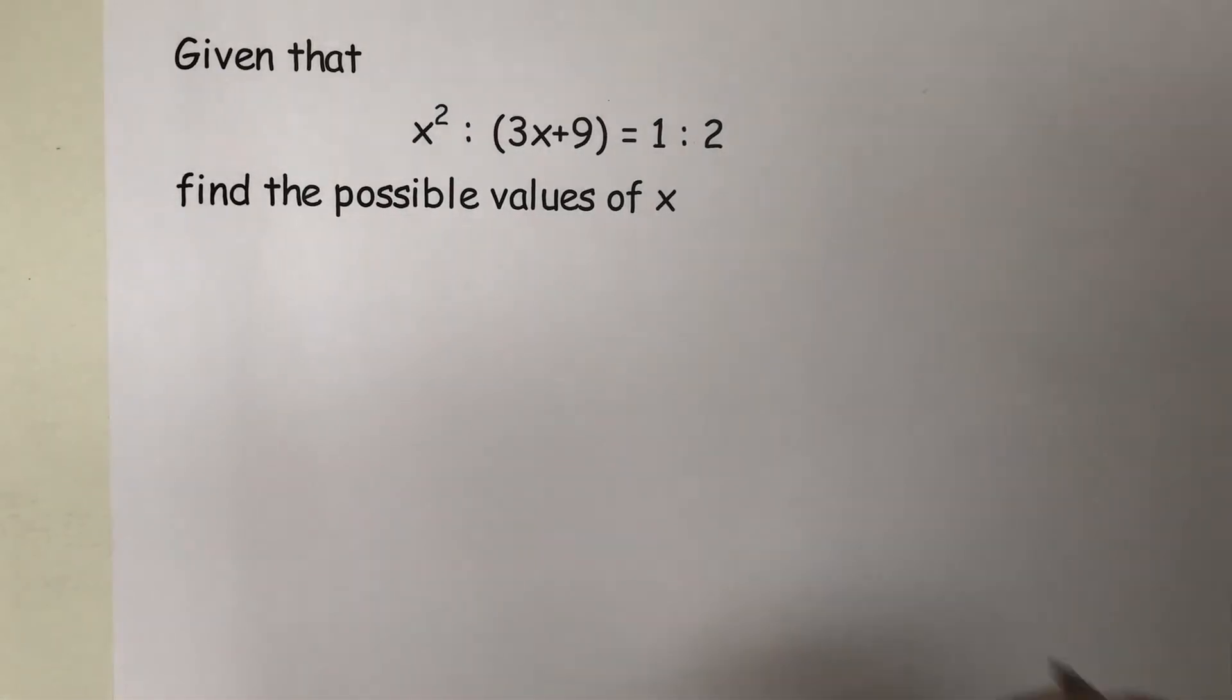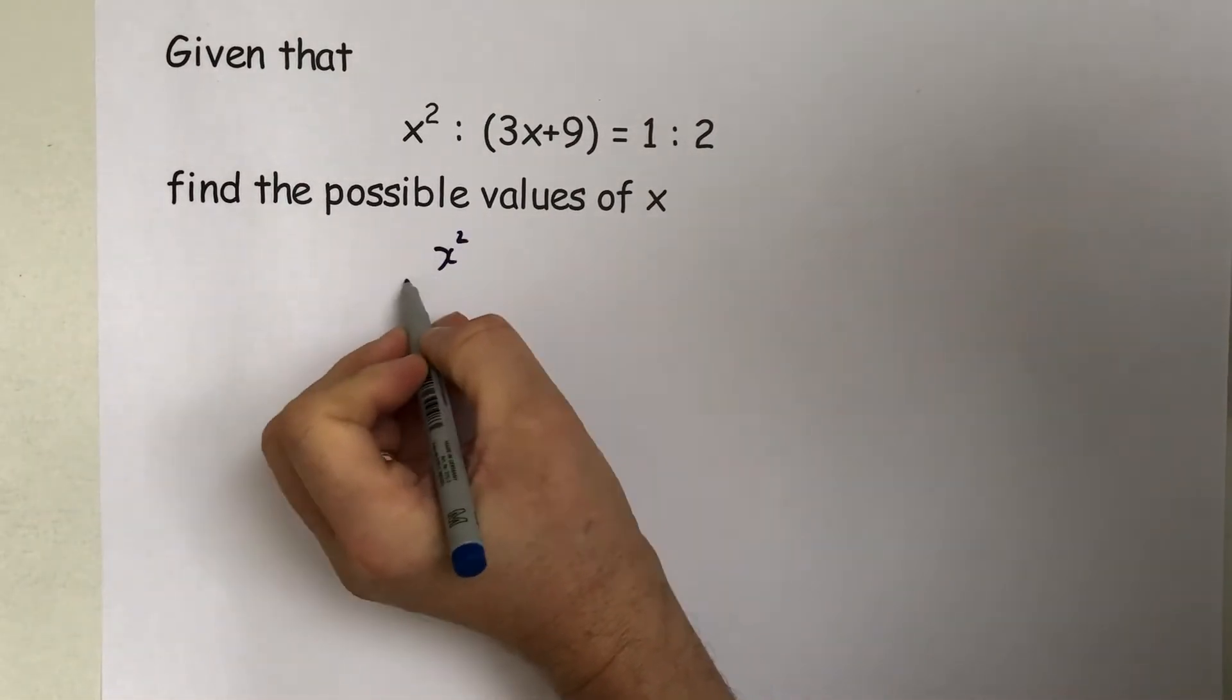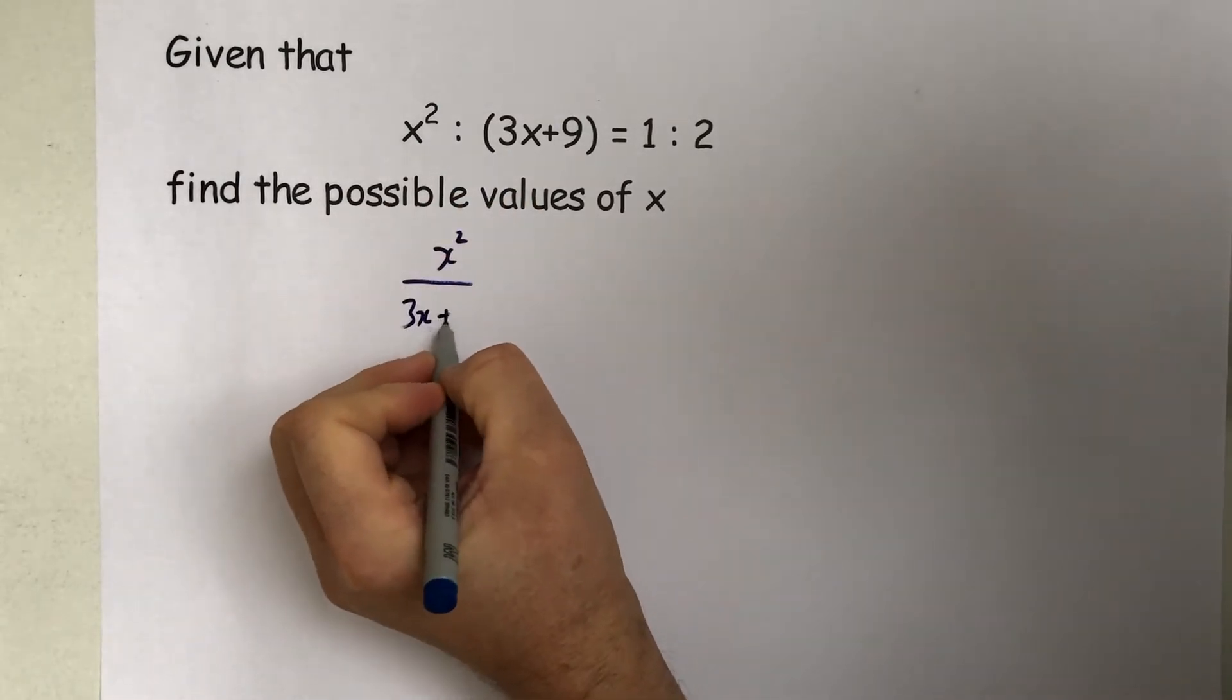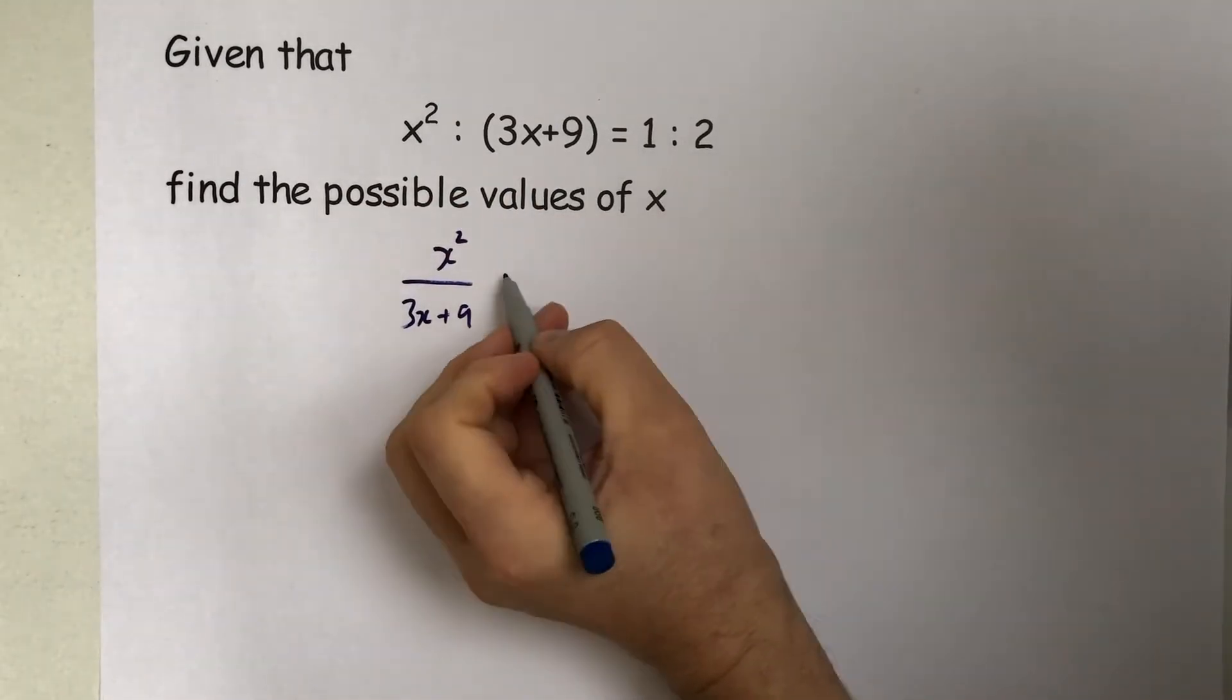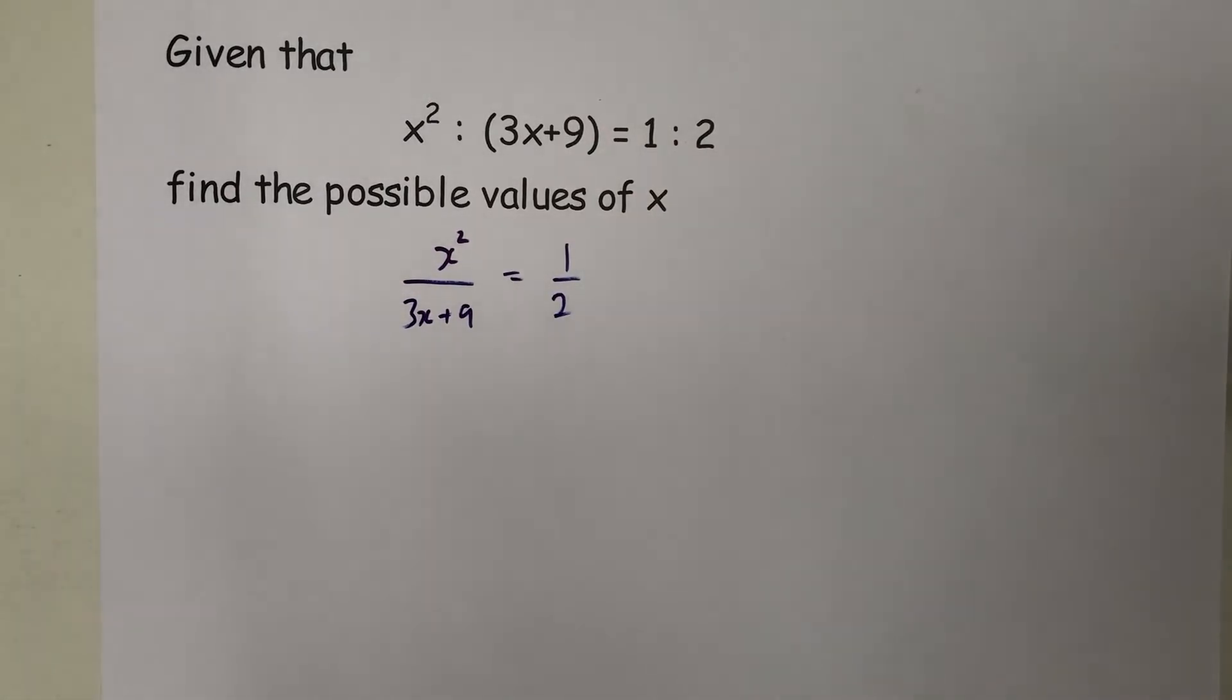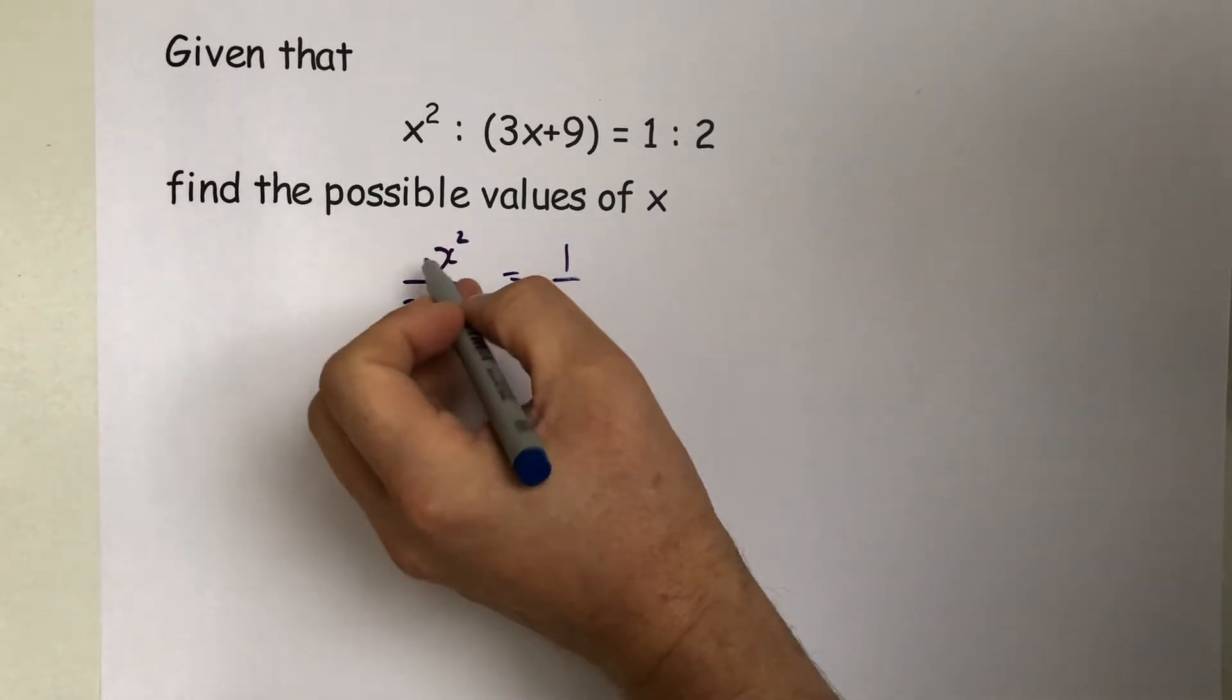In order to do these ratio questions, first of all express it as a fraction. So this one as a fraction must equal this one as a fraction. Then we can cross multiply, so the 2 on the side is...